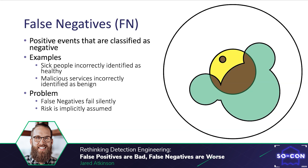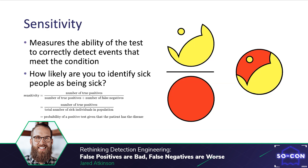Binary classification has a metric known as sensitivity, which measures the ability of the test to correctly detect events that meet the condition. It answers the question: how likely are you to identify sick people as being sick? The yellow shape represents true positives and the red circle represents condition positive events. By comparing these values we derive the sensitivity of our test. The sensitivity of the test is often dictated by risk tolerance.